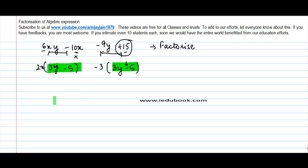What do I notice? Interestingly, 3y minus 5 is common in both these cases, so I can take 3y minus 5 as common, into what? 2x minus 3. So 3y minus 5 and 2x minus 3 become the factors of 6xy minus 10x minus 9y plus 15.